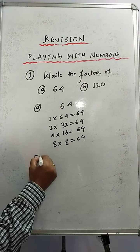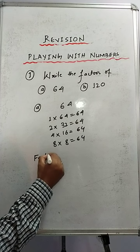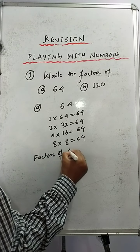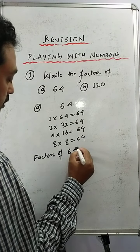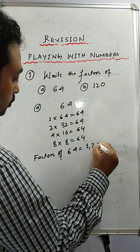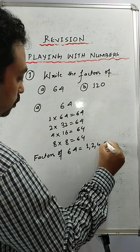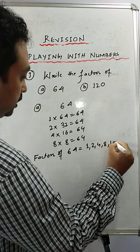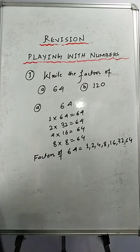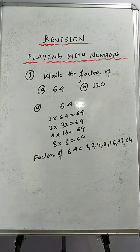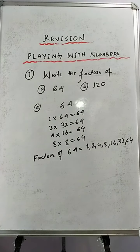So we'll write factors of 64: 1, 2, 4, 8, 16, 32, and 64. These are all the factors of 64 students. Now let's move on to the second part of the question.